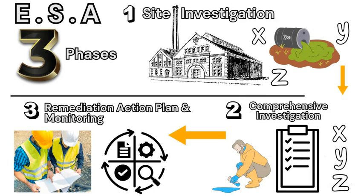The ESA, or Environmental Site Assessment, is a standardized nationwide process to clean up a site deemed to be polluted, contaminated, or hazardous to both humans and the natural environment, including both the physical environment and the species that inhabit the location. This sequence occurs in three phases: Phase one is the site investigation; phase two is a comprehensive investigation of the site; and phase three is remediation, action plan, and long-term monitoring of the environment.